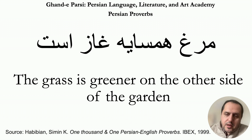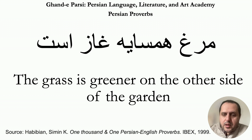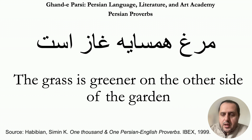If we want to analyze the very words and the structure of the Persian proverb, we should say that مرغ in Persian means hen. Of course in modern Persian it means hen, but if you refer to the classic Persian masterpieces you would see that مرغ is not hen as we say now — it is something like bird.